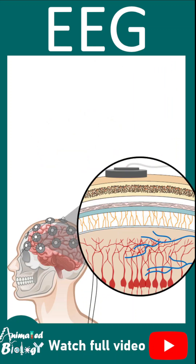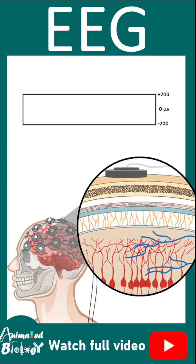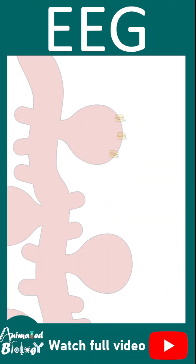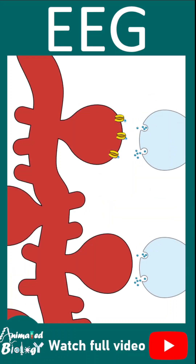All these recordings correspond to microvolt-level fluctuations in the signal. These signals correspond to tiny changes in the electrical potential of neurons at the surface level of the brain, and that corresponds to voltage oscillations.